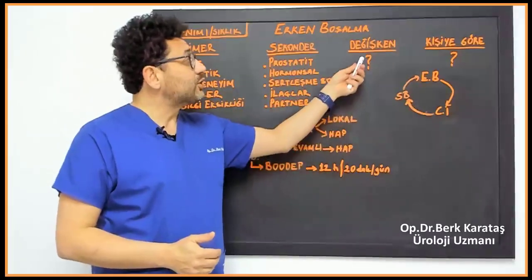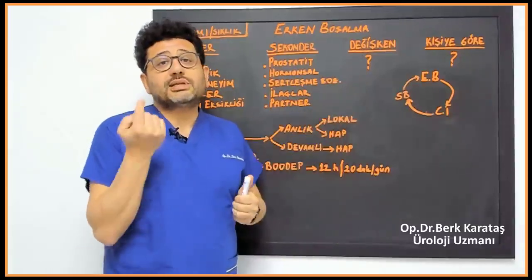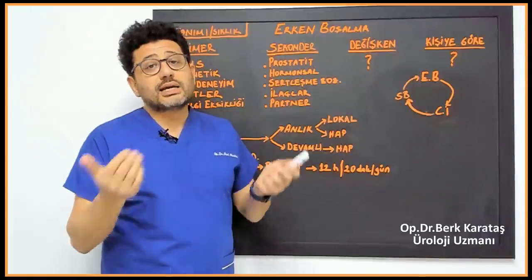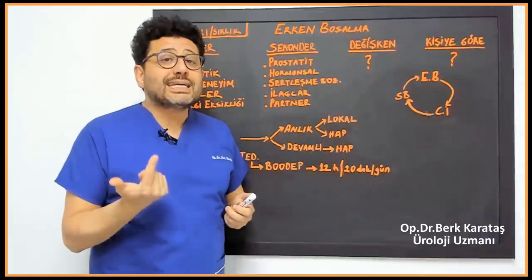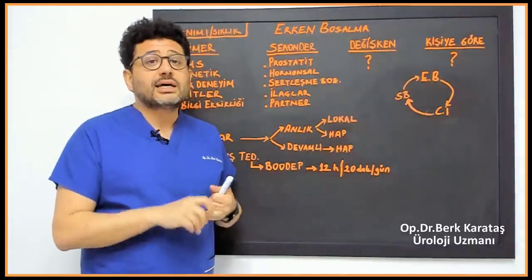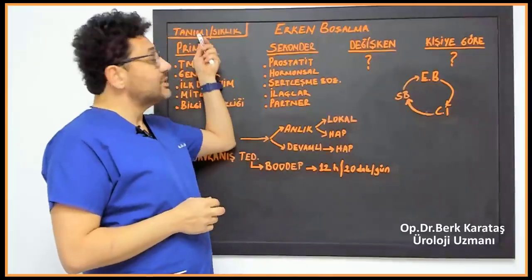but if there is really a premature ejaculation, it should always be in both primary and secondary. The patient says something very misleading here: I had intercourse once, I ejaculated prematurely there. So he says I am ejaculating prematurely. However, one-night stands cannot be evaluated